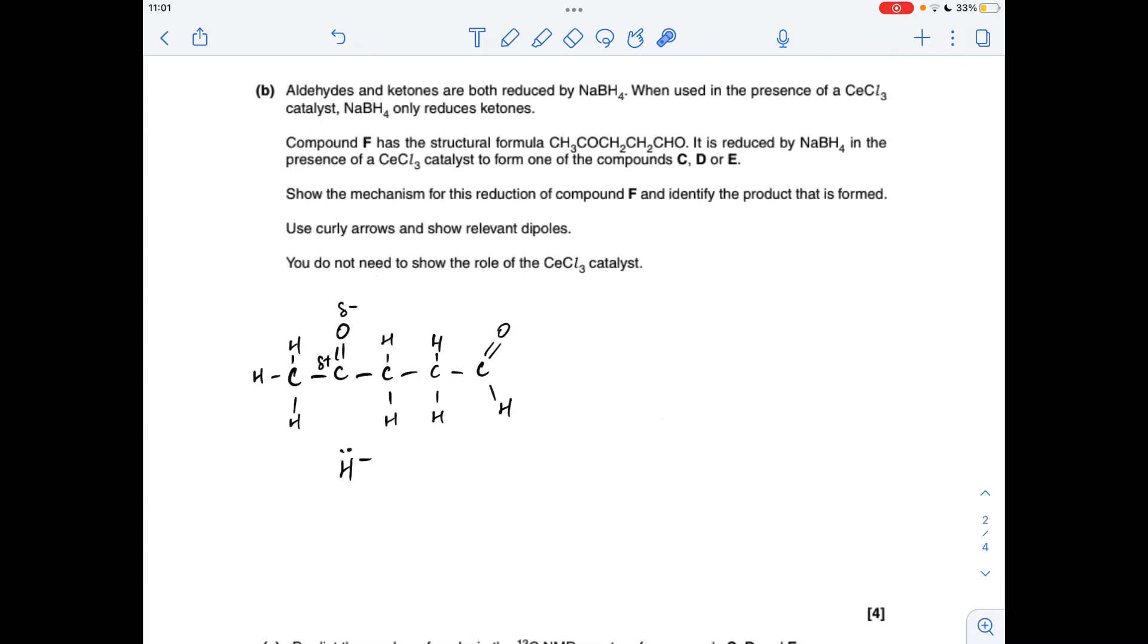Moving on to the mechanism. So we're told that when the CeCl3 is present only the ketone groups reduced, so the reaction is going to take place here. The NaBH4 is a source of hydride ion so we're going to use the hydride ion in the mechanism. So we take a curly arrow from the lone pair on the H minus, take it to that slightly positive carbon and we need to repel a pair of electrons from the pi bond in the double bond up to the O. That's going to give the intermediate shown on the screen now. So there's a couple of ways you can finish this off.